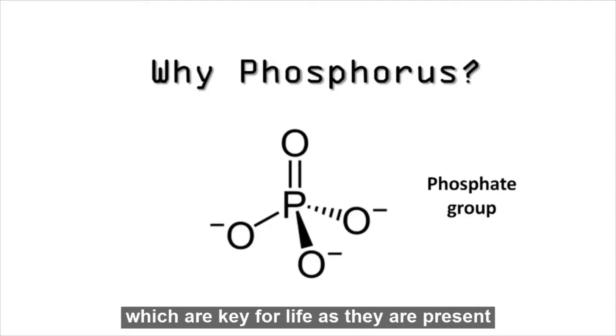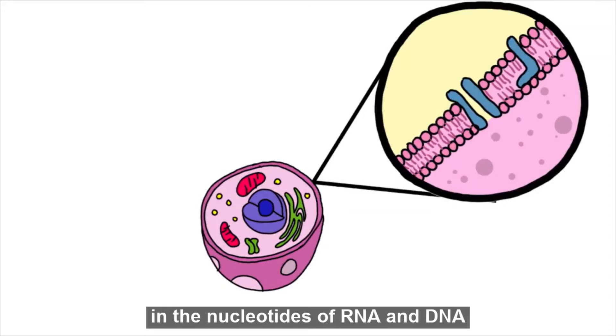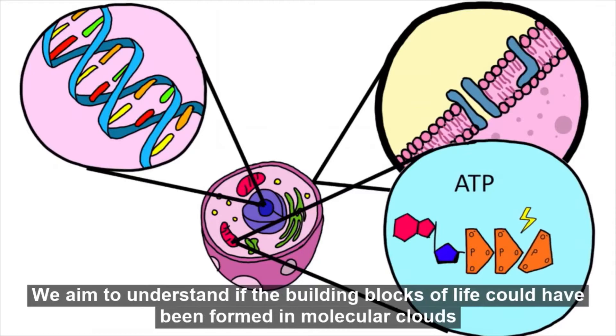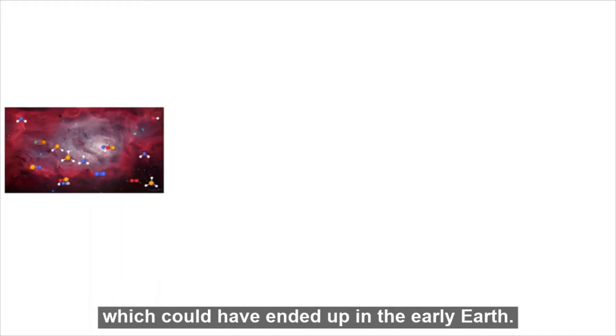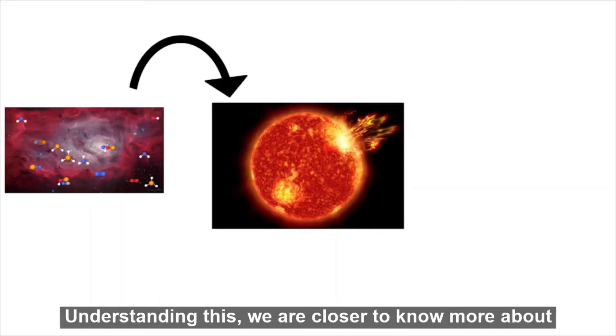Well, phosphorus is the center of phosphates, which are key for life, as they are present in the cell membrane phospholipids, in the nucleotides of RNA and DNA, and in ATP, the energy transportation molecule. So, we aim to understand if the building blocks of life could have been formed in molecular clouds, starting from the formation of the simplest phosphorus-bearing molecules, which could have ended up in the early Earth. Understanding this, we are closer to know more about the origin and evolution of life, key question in Astrobiology.